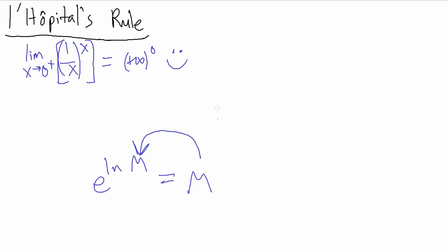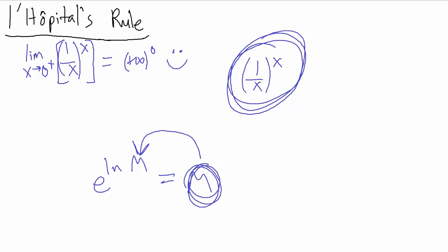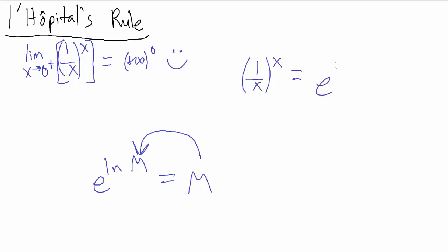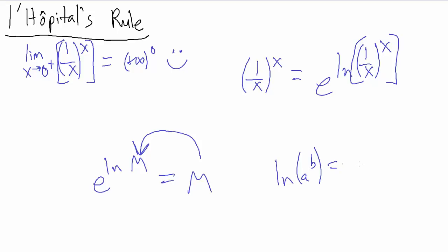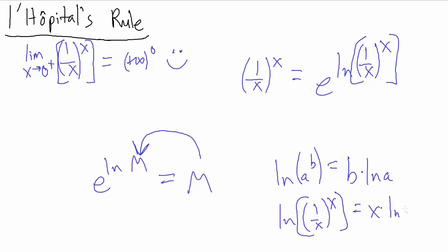We're going to do that exact same thing here. We take 1 over x to the x — this is our m — and write it as e to the natural log of (1/x) to the x. Then we use the logarithm power rule: natural log of a to the b equals b times natural log of a. So we pull out the exponent x, giving us e to the x times natural log of 1 over x.